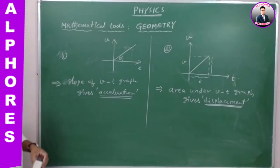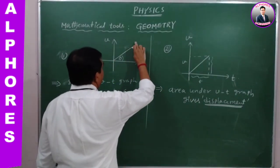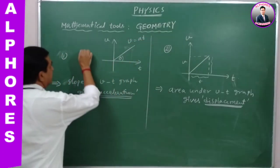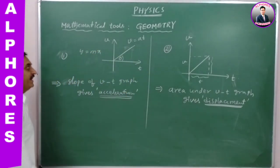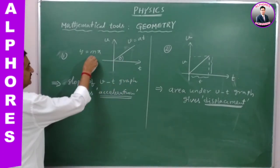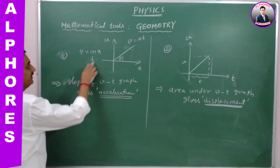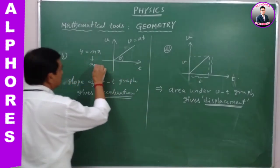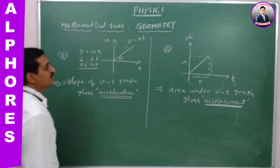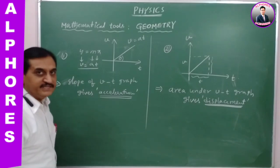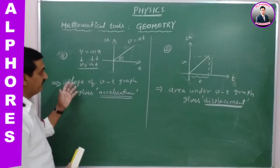Let us recall some key points. First, a velocity-time graph passing through the origin has line equation V is equal to AT, because it is of the form Y equals MX — a straight line through the origin. The slope of the velocity-time graph gives acceleration A, and T is on the X axis while V is on the Y axis. This is a very important result.